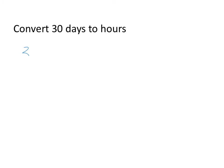Now let's say we want to convert 30 days to hours. We're going to use a known relationship again. We want to put days into the denominator of the fraction and hours into the numerator. We know that one day is equal to 24 hours. Now I can use my calculator to find out...